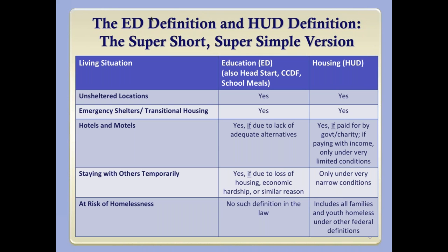The term 'at risk of homelessness' does not exist at all in the education definition, nor in the other federal programs that use the education definition. In HUD terminology, 'at risk of homelessness' is defined and does include all families and youth who are homeless under other federal definitions. This is just a basic framework to begin to understand the nuances and differences between these definitions.